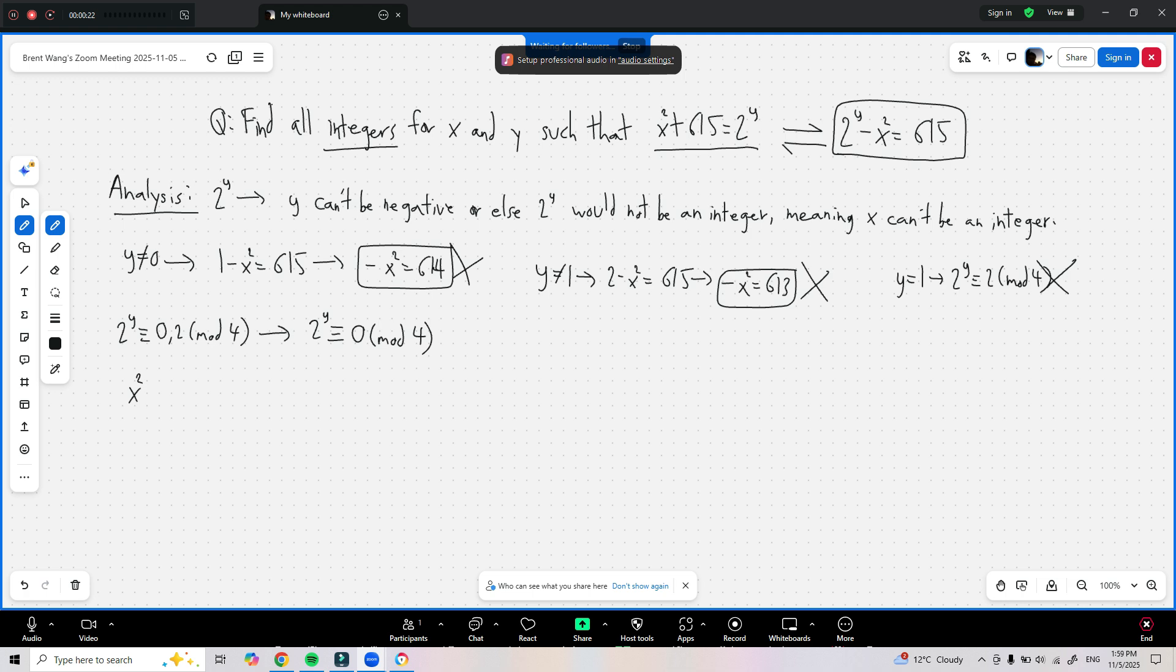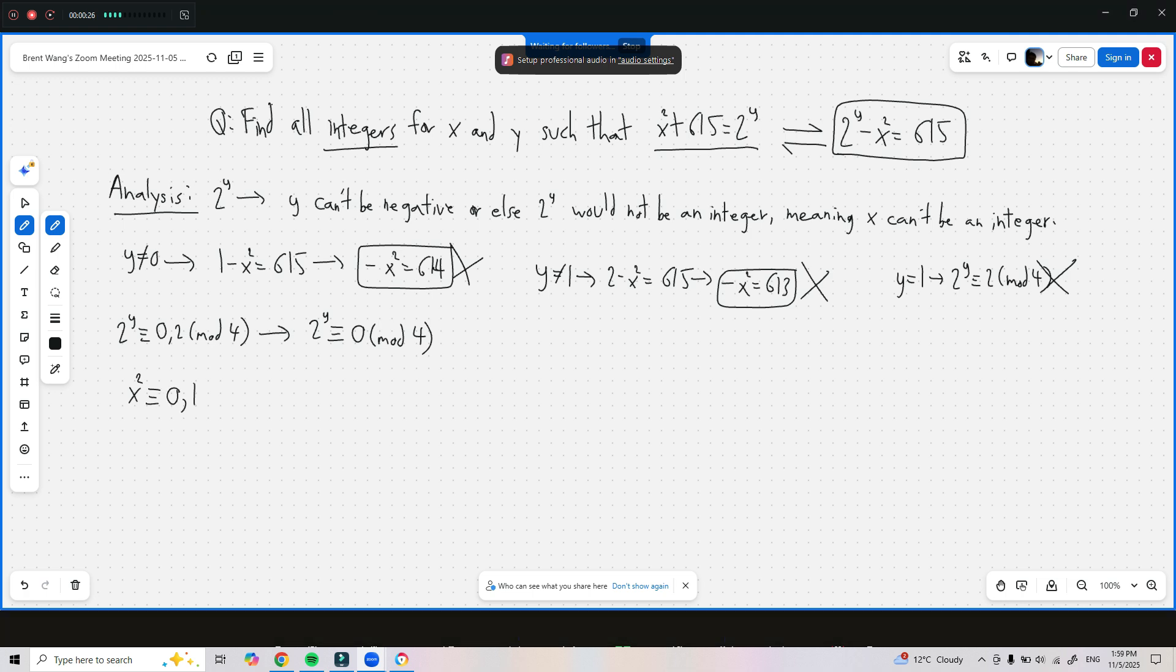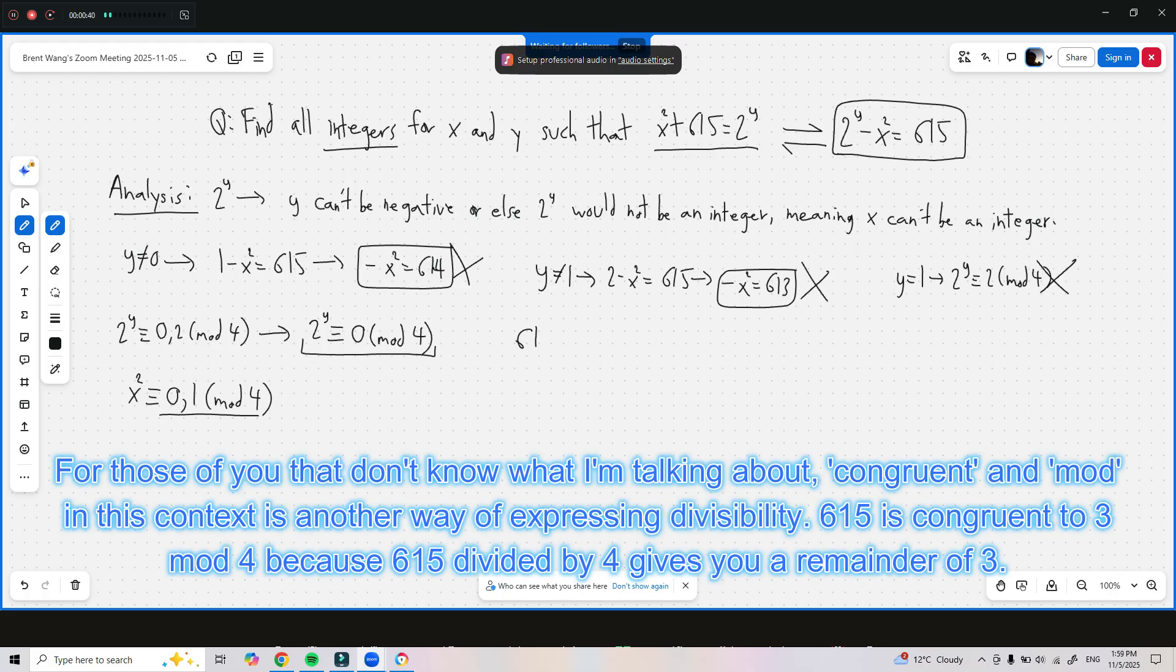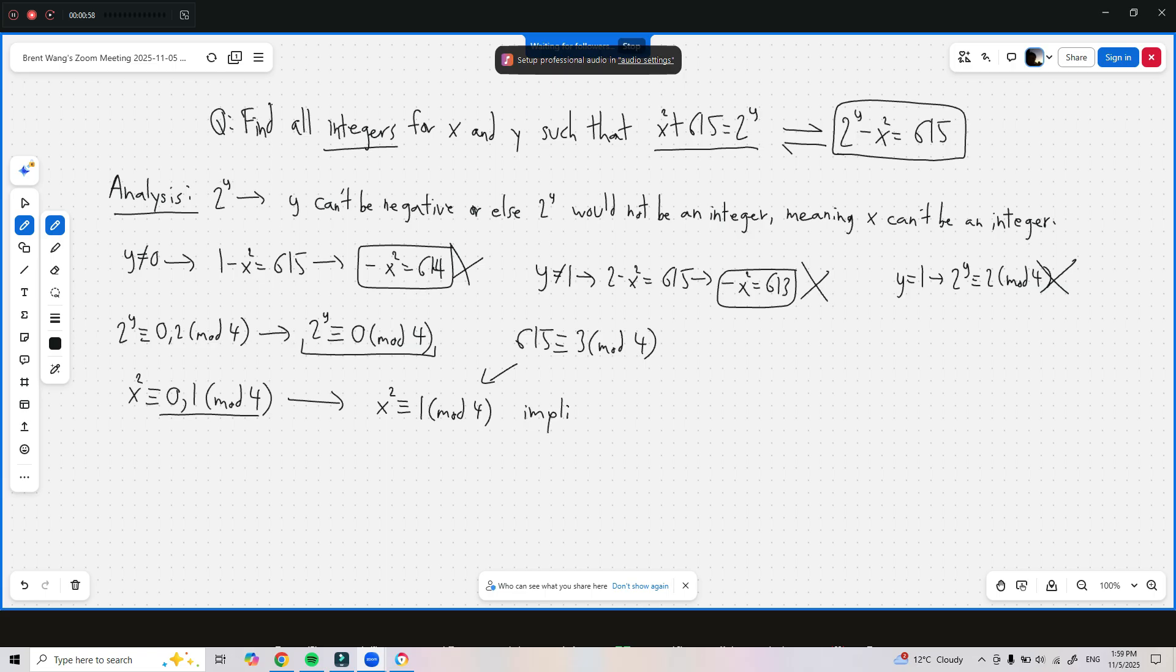x squared will always be congruent to 0 or 1 mod 4. Try it yourself. You'll see that this is always going to be the case. However, we already saw that 2 to the power of y is congruent to 0 mod 4, and because 615 is congruent to 3 mod 4, the only way that this would make sense in modular arithmetic is if x squared is congruent to 1 mod 4, and this implies that x has to be odd.